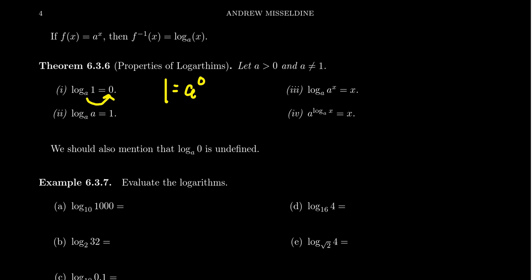Since 1 is equal to a to the 0, this tells us that log base a of 1 is equal to 0. This is an important observation: for a logarithm, assuming no transformations are in play, x equals 1 is going to be the x-intercept of logarithms.